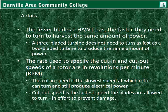The cut-in speed is the slowest speed at which the rotor can turn and still produce electrical power. The cut-out speed is the fastest speed the blades are allowed to turn — relating to wind speed and RPM. Of course, as wind speed increases, RPM goes up. The cut-out speed is an effort to prevent damage: once the wind becomes too great, it will over-speed the rotor, and that's when the turbine needs to be shut down.